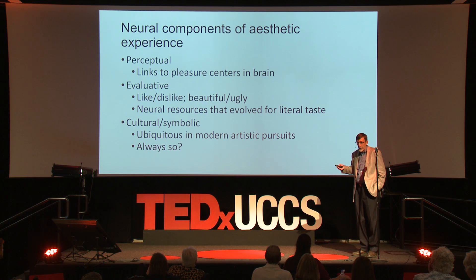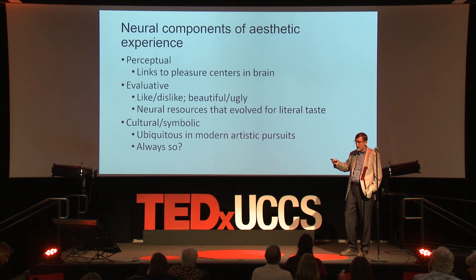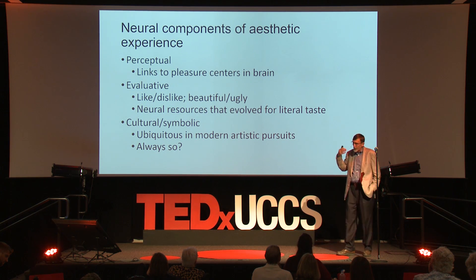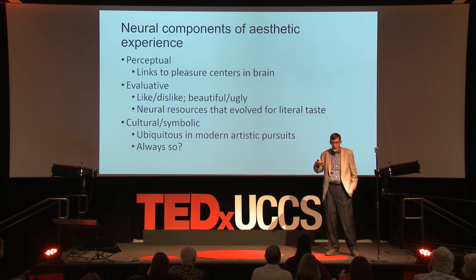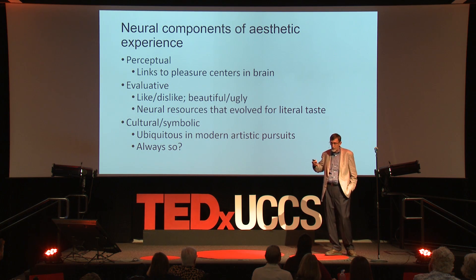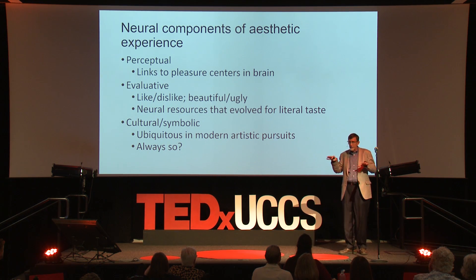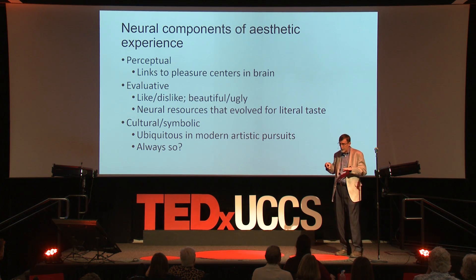I'm a cognitive archaeologist, interested in what the past tells us about the evolution of human cognition. What I'm going to start with is a question about the nature of human aesthetic experience from a cognitive point of view — that is, what happens in your mind when you have an aesthetic experience? It turns out there are three different components cognitively to an aesthetic experience.